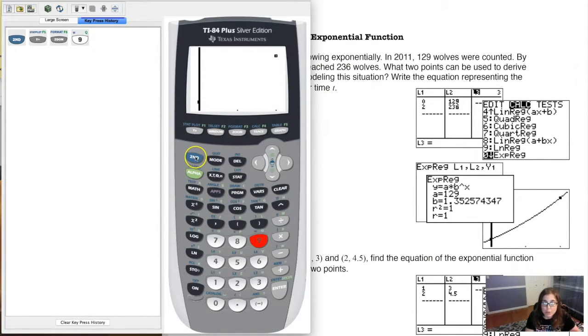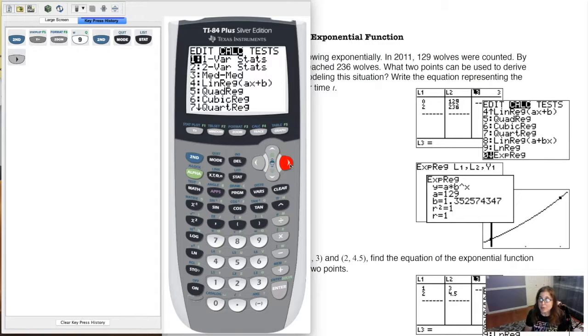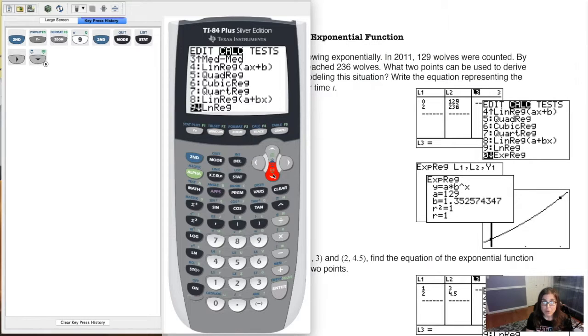Okay, so here we go. Let me go back to my home screen, second mode. Let's hit stat. We'll go over to calc. Now we've done linear regression, quadratic, cubic, quartic, but if you keep scrolling down you have to scroll all the way down to zero. Wait for it, there it is. There's exponential regression.